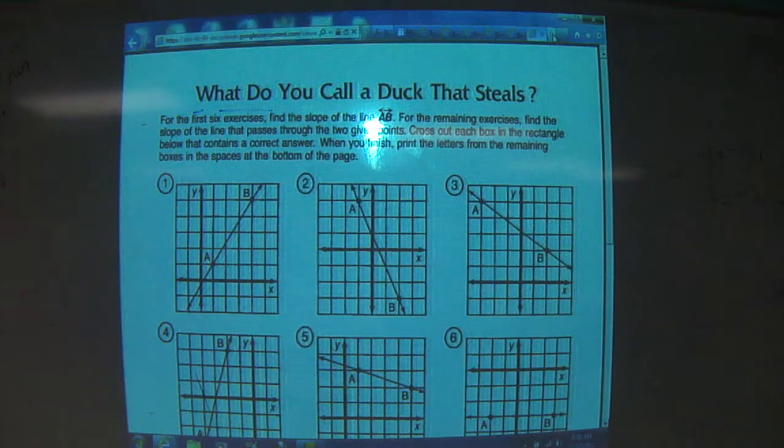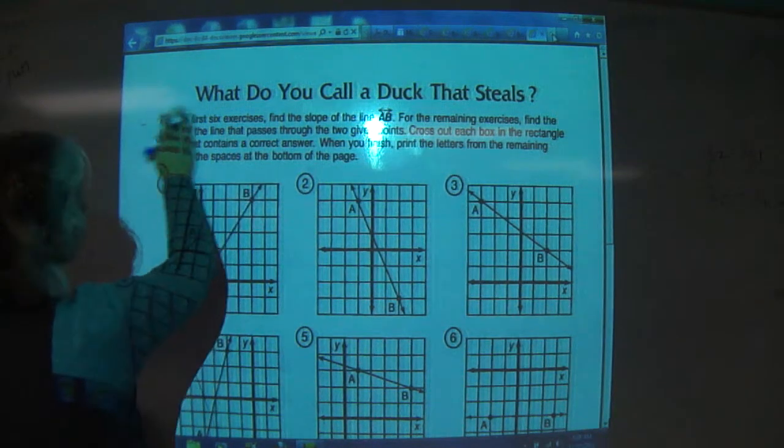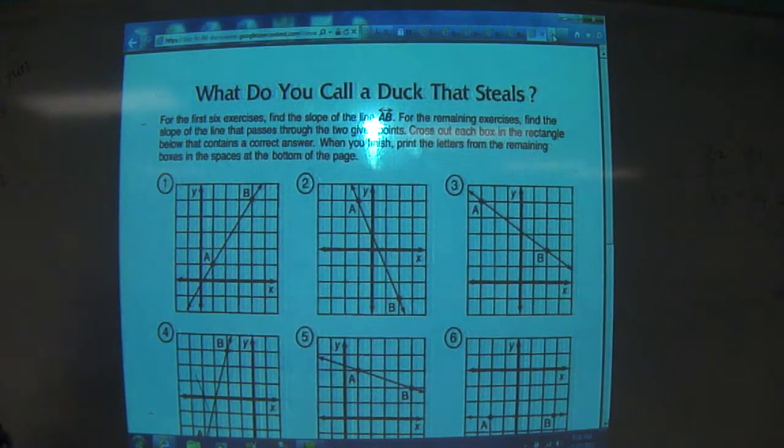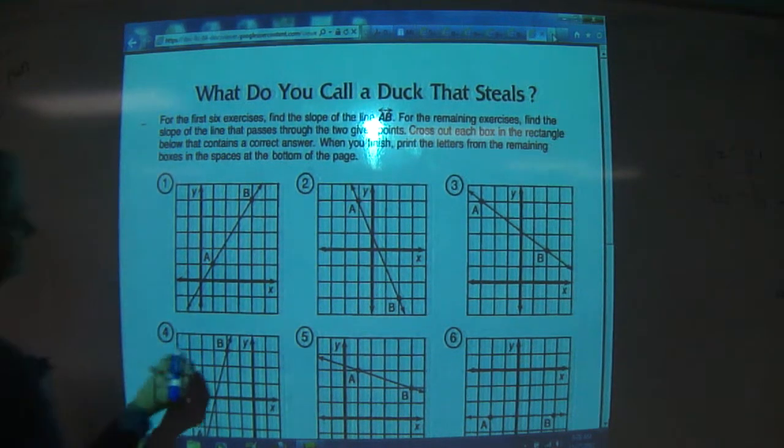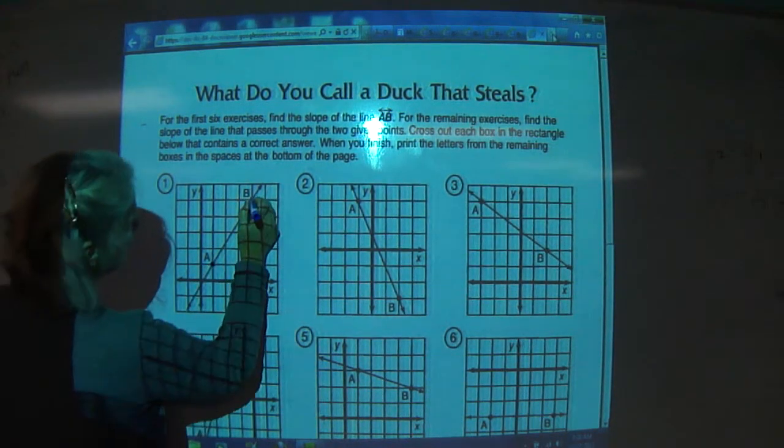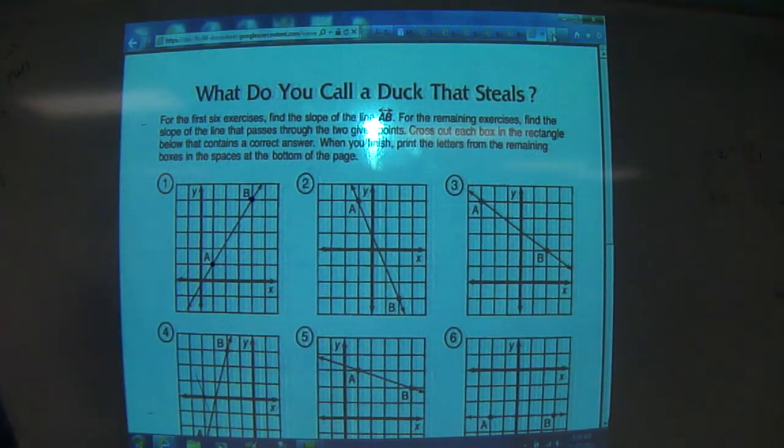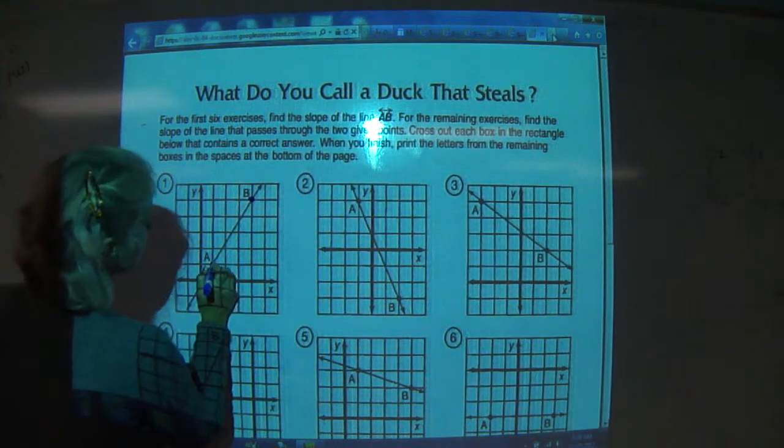So when we're talking about slope here, the easiest way to begin is we find two points on the line we need to determine the slope for. And on this one, they give them to us. I've got A and B here. On those two points, draw a right triangle. And you can draw it up, you can draw it down. It doesn't matter.